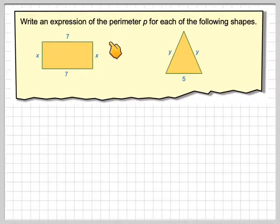Write an expression of the perimeter for each of the following shapes. Here we've got a rectangle, so the perimeter is the distance around the outside of the shape.